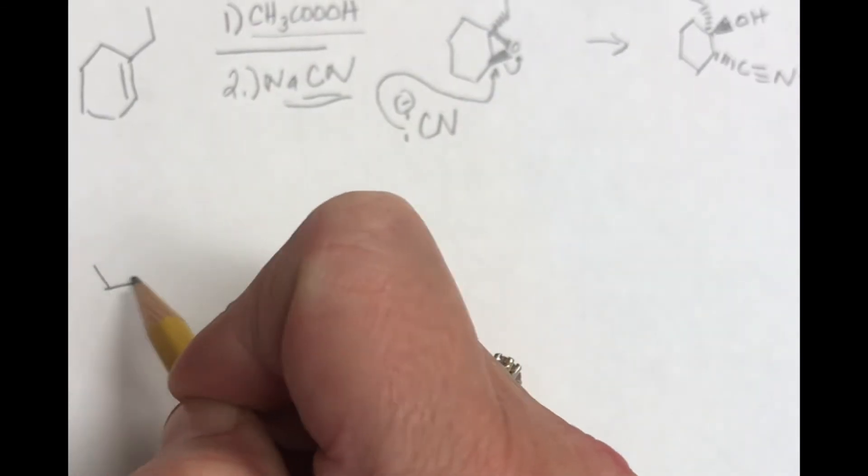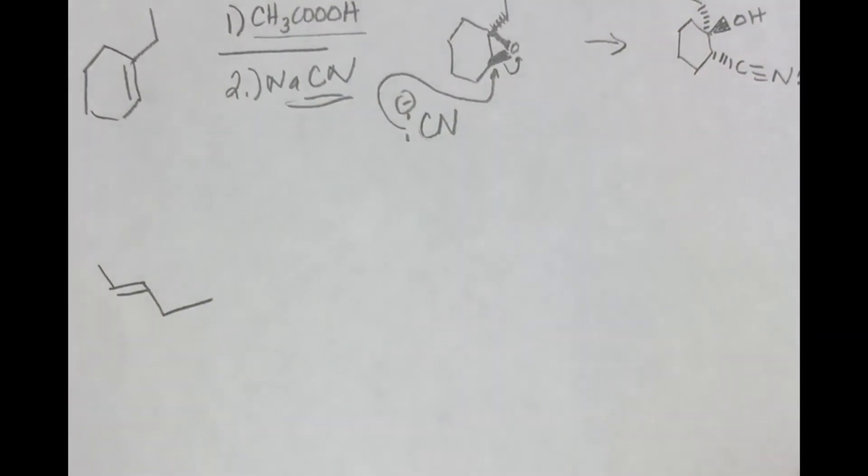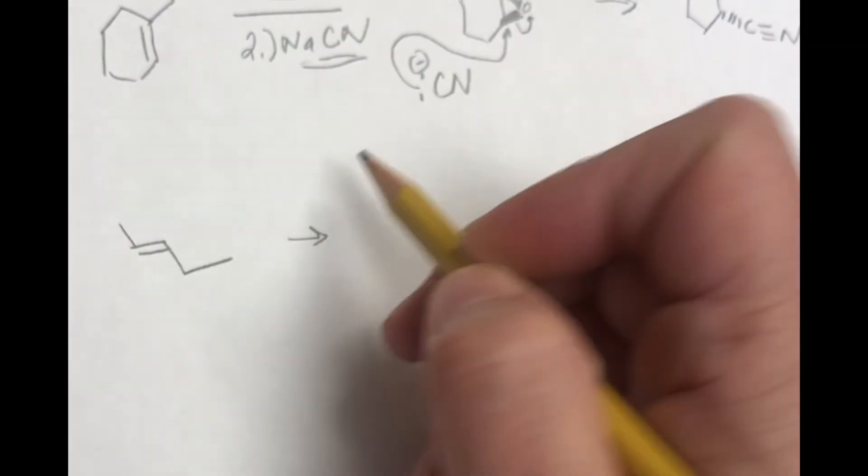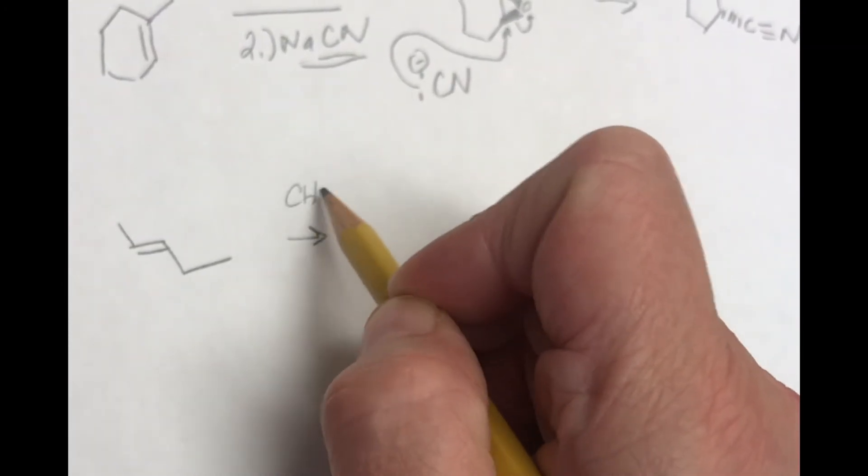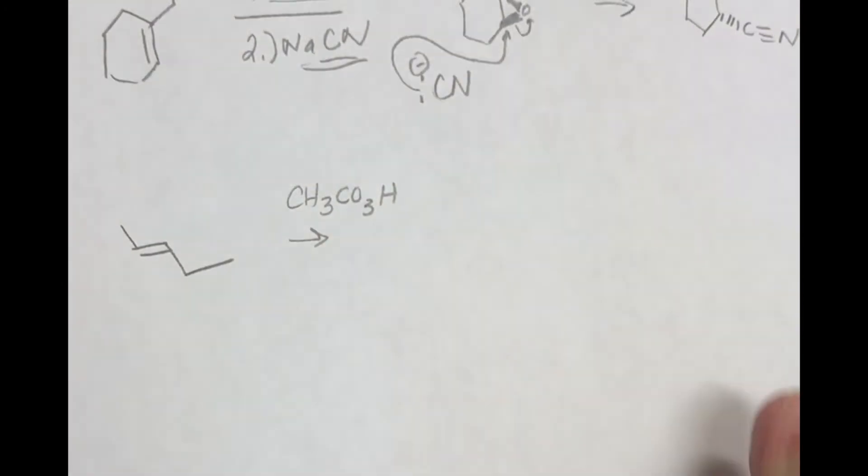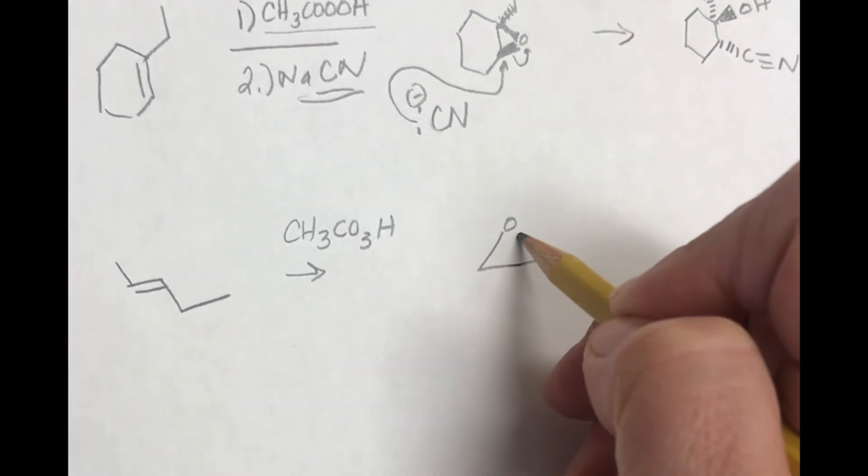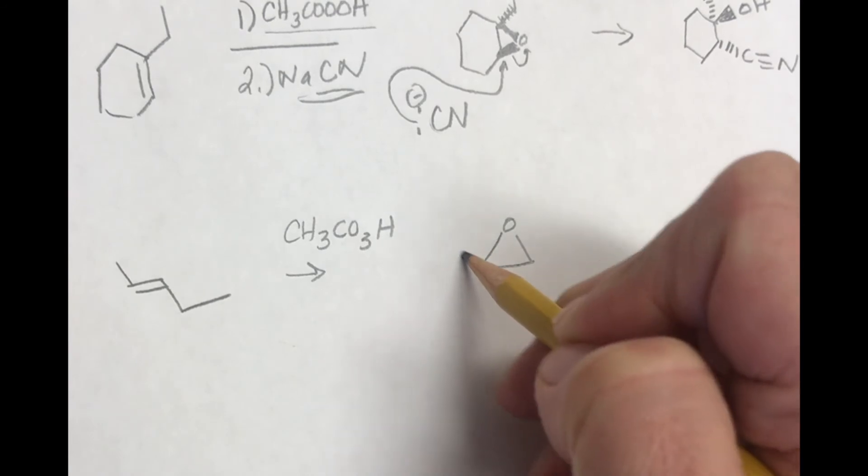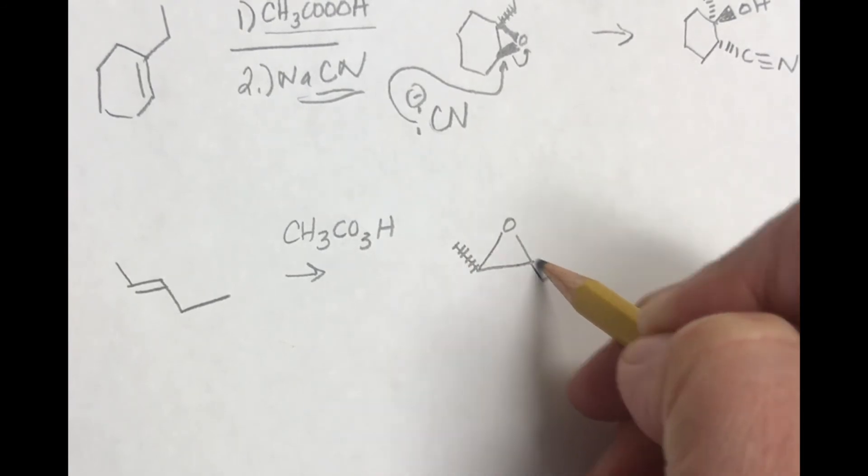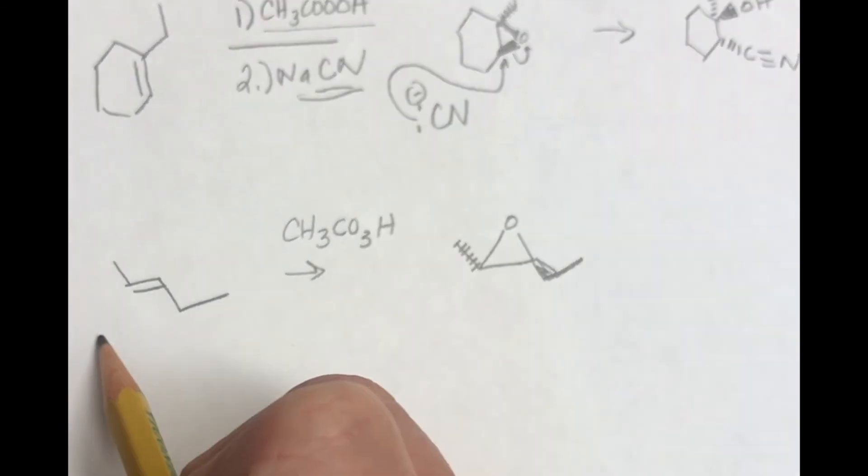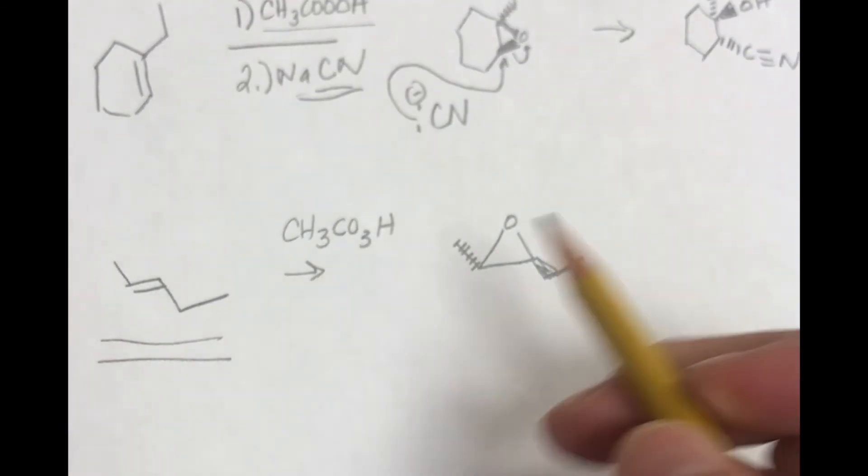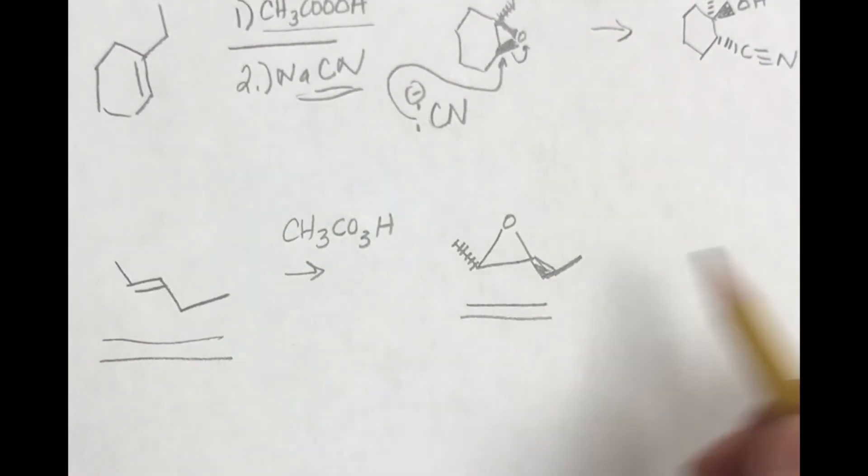And the third problem asked for trans-2-pentene reacting with just peroxy acid. And what we get is just the epoxide. And so what I needed you to show me here was that our epoxide was trans. So we have a trans-alkene that leads to a trans epoxide. And so that's what I was looking for in that question.